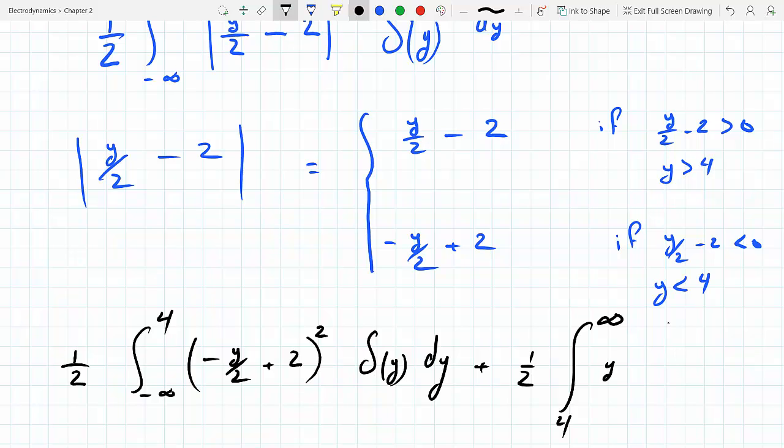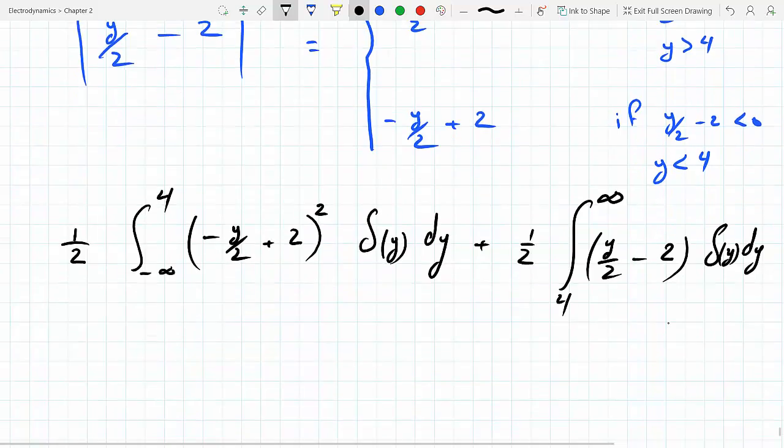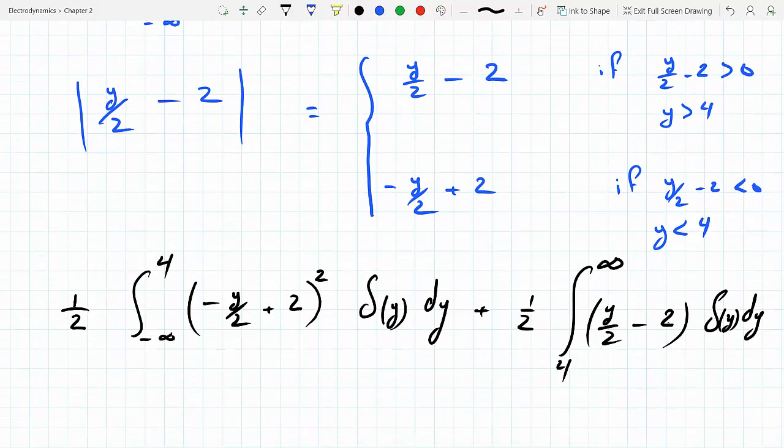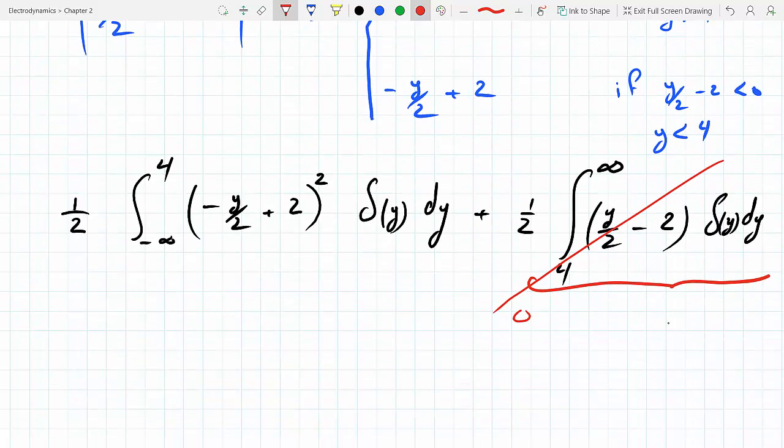Now what's the value of the right integral? Zero, because this peak is at y equals 0, and 0 is not between 4 and infinity, so this whole piece is 0. You agree? And then what's this piece?